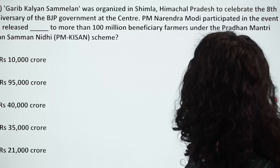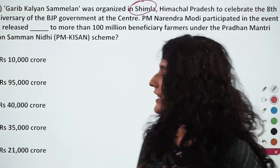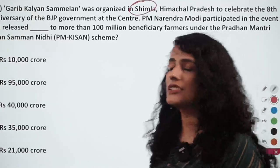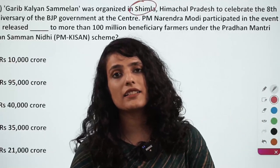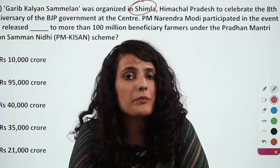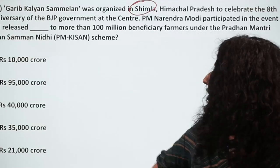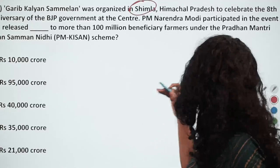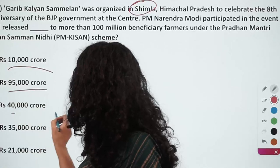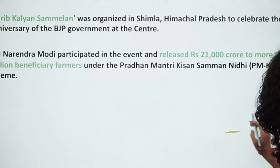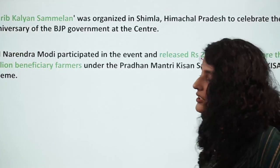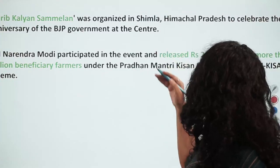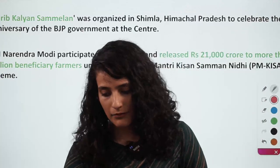Garib Kalyan Sammelan was organized by the Government of India in Shimla to celebrate the 8-year anniversary of the BJP government at the centre. How much amount has been dispersed to farmers under PM Kisan Samman Nidhi? The correct answer is rupees 21,000 crore has been dispersed to more than 100 million beneficiary farmers under Pradhan Mantri Kisan Samman Nidhi.